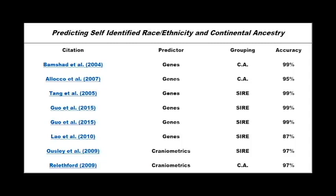And if you do look at a bunch of genes or for that matter a bunch of measurements of someone's skull, you can predict someone's self-identified race or continental ancestry with a lot of accuracy. Like more than 90% in the case of skulls and more than 99% in the case of genes.